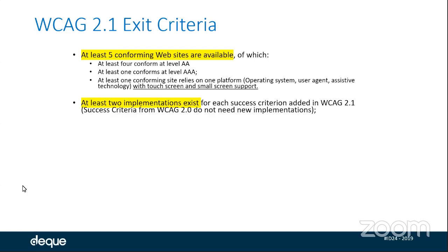We also had to have at least two implementations for each success criteria to be met. Anything new going forward — we had to prove not only that websites were producing the content, but that new attributes and requirements could also be usable by end users. For example, a new ARIA attribute would have to show support in more than one screen reader. Anything we seek to implement needs two independent implementations, which traditionally also means it works in more than one browser.